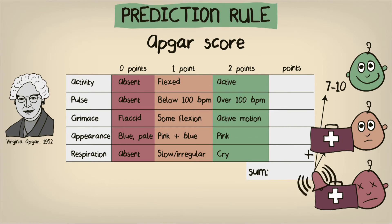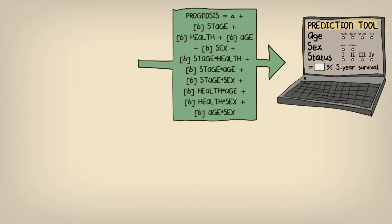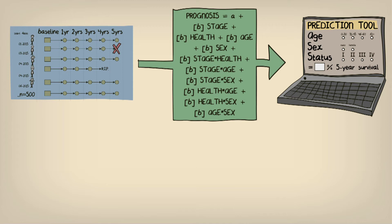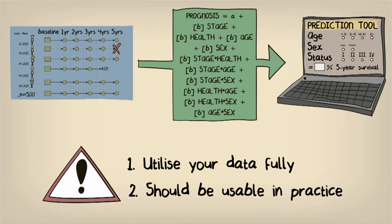More complex prognostic models are generally developed by fitting some kind of multivariable regression model to a set of empirical data. There are various ways to do this, but the most essential points to remember are that the method you choose should utilize your data fully, and the end result should be something that can be used in practice. For example, if follow-up time was collected, you may want to consider approaches that can use that property, such as a Cox proportional hazard model.